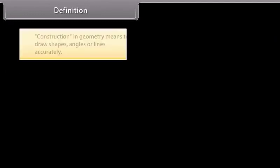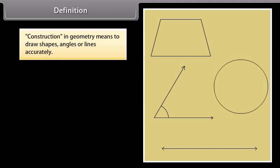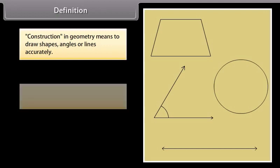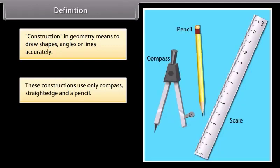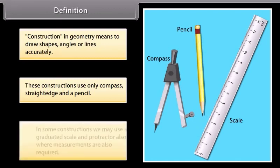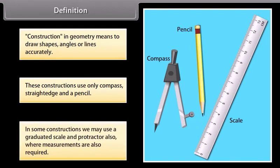Definition: Construction in geometry means to draw shapes, angles or lines accurately. These constructions use only compass, straight edge — i.e. ruler — and a pencil. In some constructions, we may also use a graduated scale and protractor, where measurements are also required.